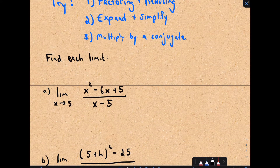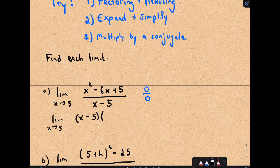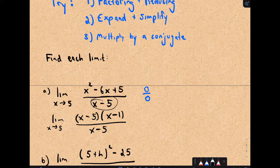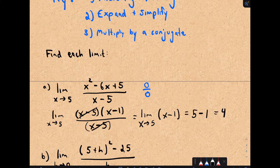In my first example, I have the limit as x approaches 5 of (x² - 6x + 5) / (x - 5). Notice if you plug in 5, the numerator gives 0, and the denominator gives 0 as well. This looks like a factoring and canceling problem. I can factor x² - 6x + 5 as (x - 5)(x - 1). If you're getting 0 over 0, that means there's a common factor. I cancel the (x - 5) factors, leaving the limit as x approaches 5 of (x - 1). Plugging in 5 gives 5 - 1 = 4.